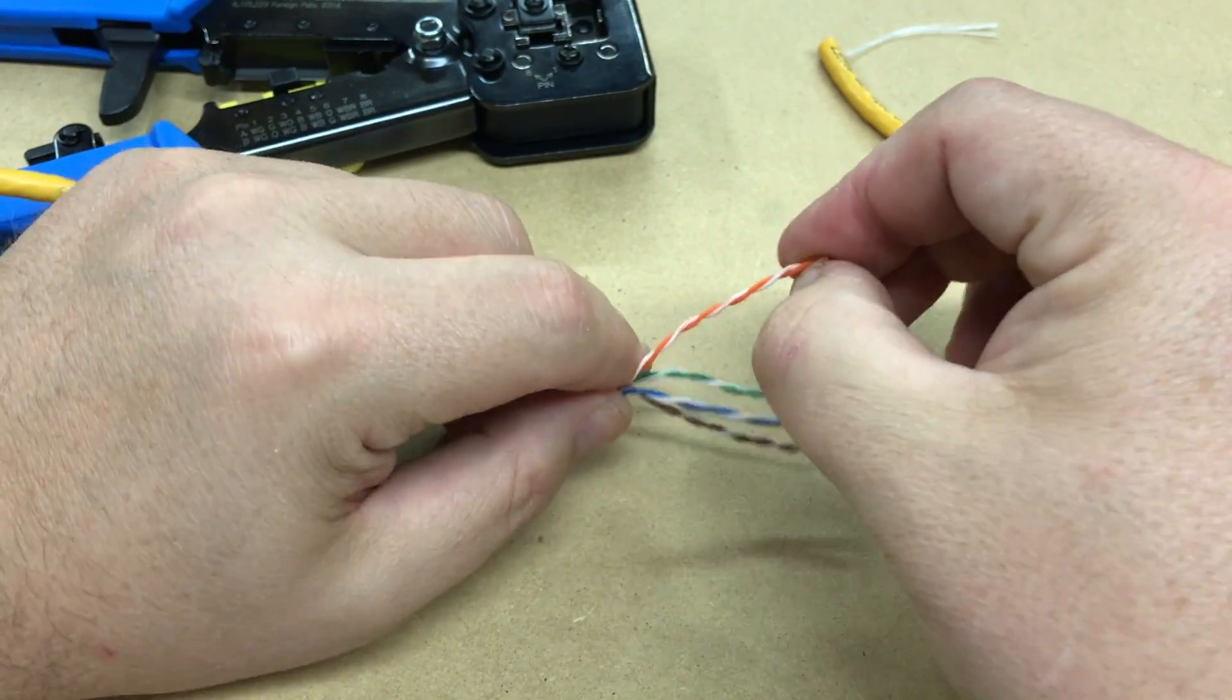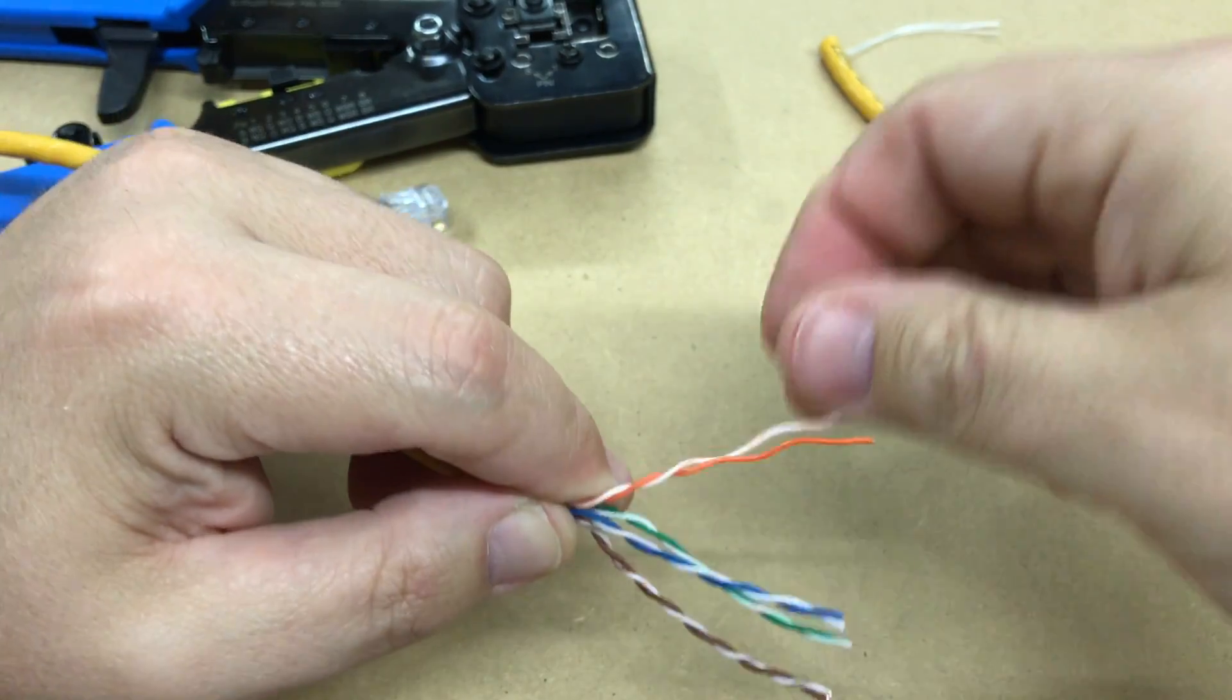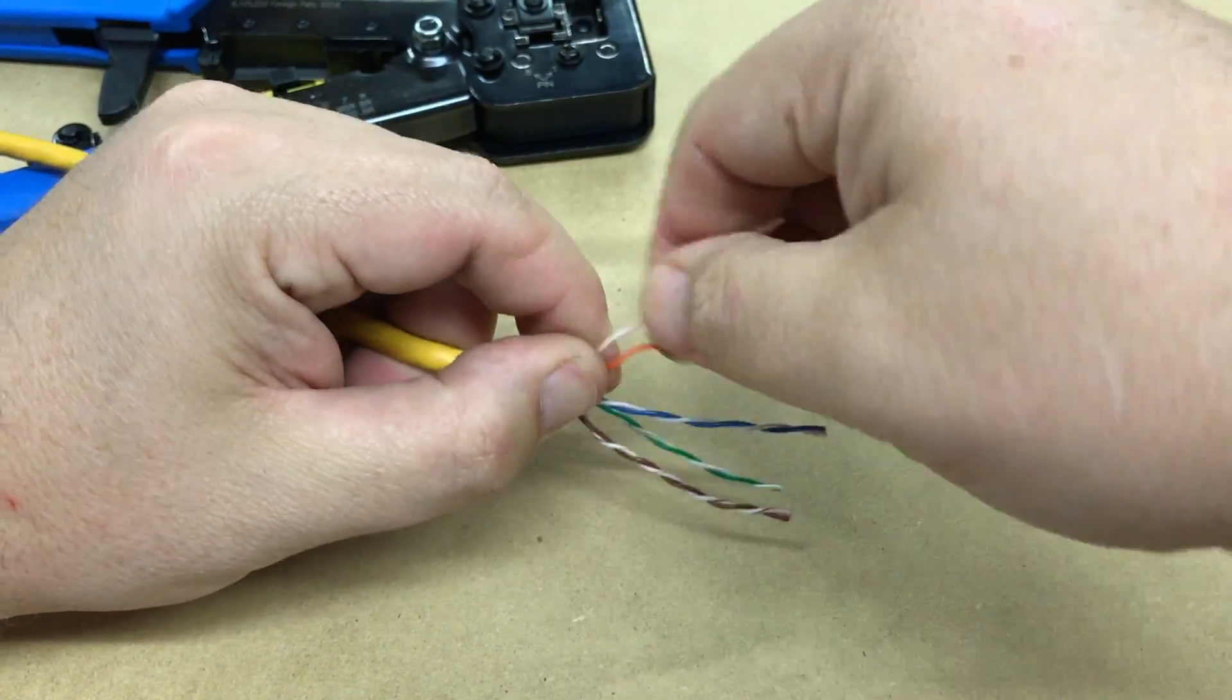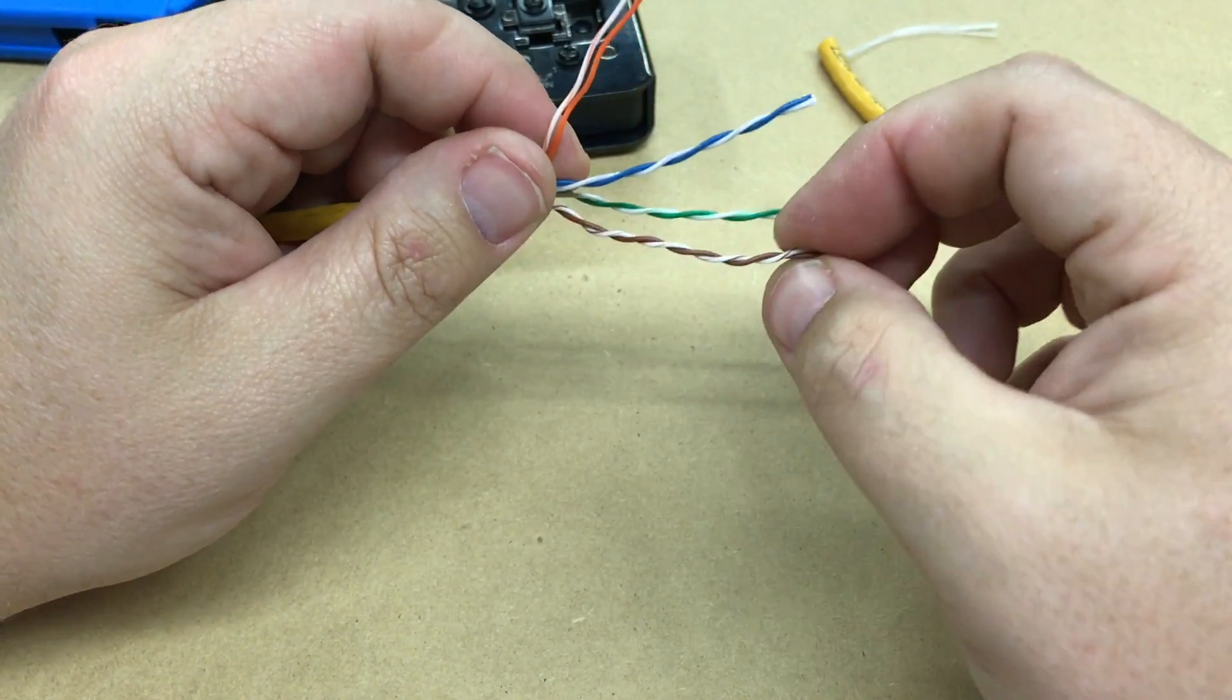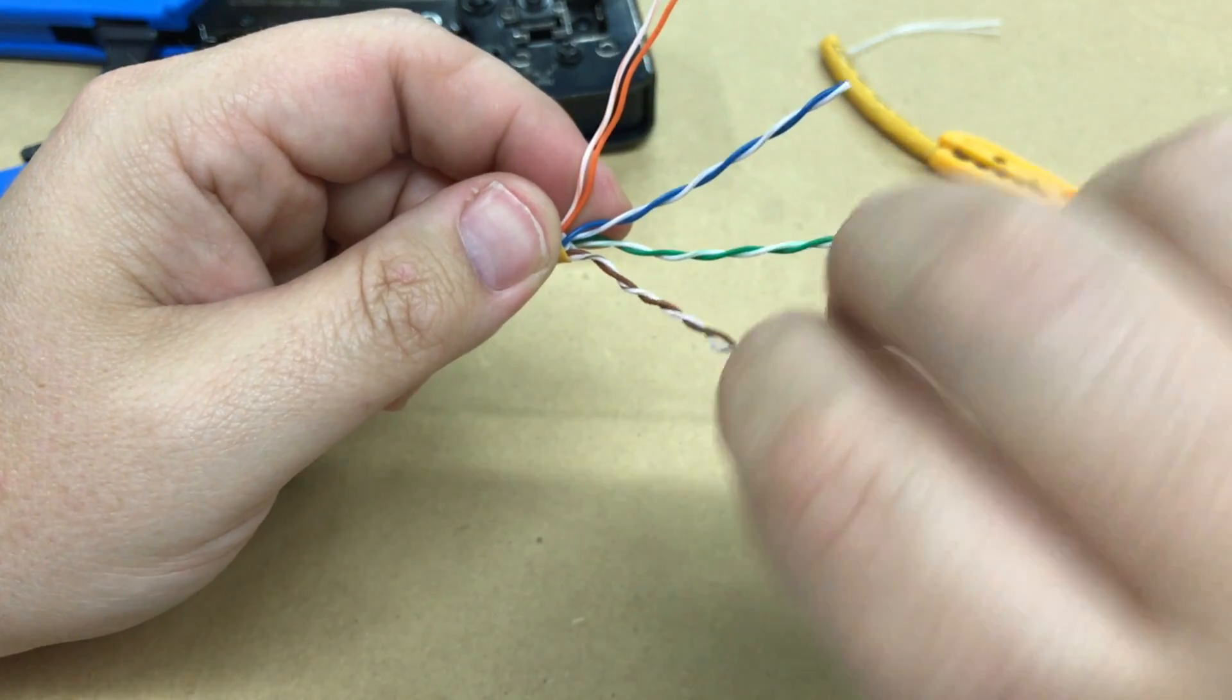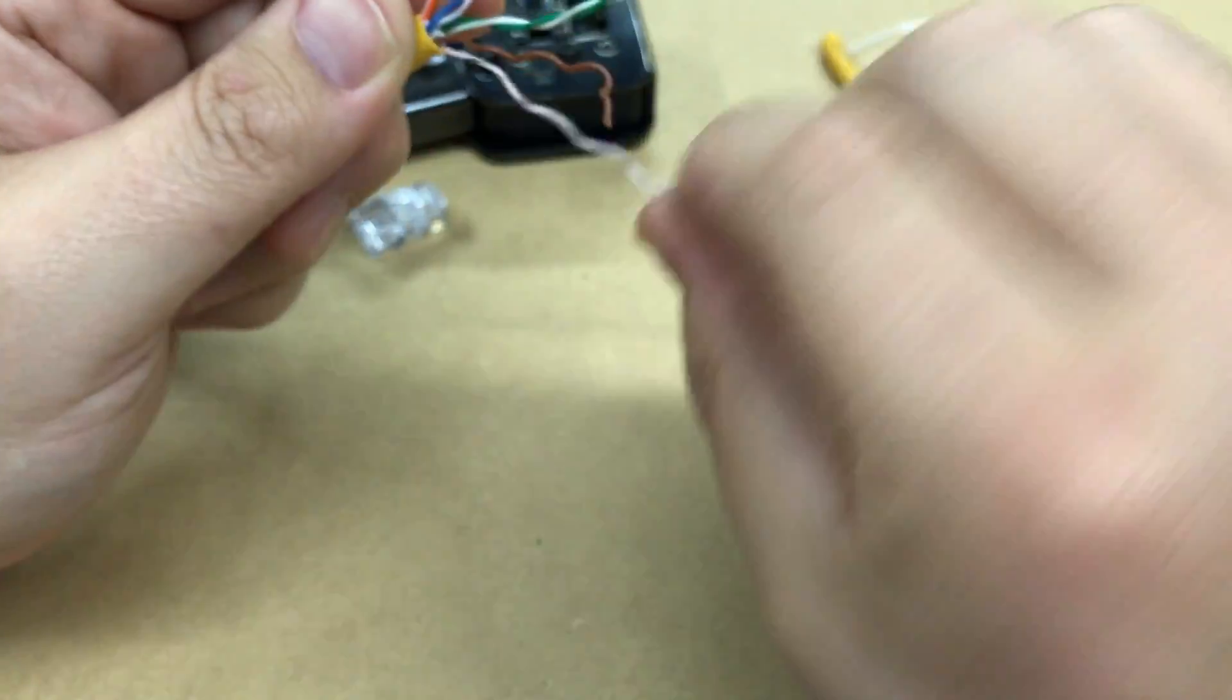This is my favorite part here. I've seen guys do this at lightning speed - I've never quite mastered that, but it's more important that it's right than it is to do it fast. This is TIA 568B, as in Bravo, which is what everything is wired to that anybody usually is going to be working on. If it's not B, it's something special that you're probably not the one making the cable for.